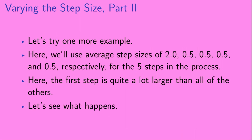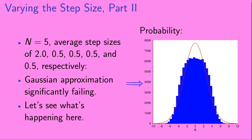Let's try one more example. Here we'll use average step sizes of 2.0, 0.5, 0.5, 0.5, and 0.5 respectively for the five steps in the process — so the first step is quite a lot larger than all of the others. Here we show the probability distribution for the position of the object for n equals 5 with these average step sizes, and we see in this case that the Gaussian approximation is significantly failing to describe the blue data.